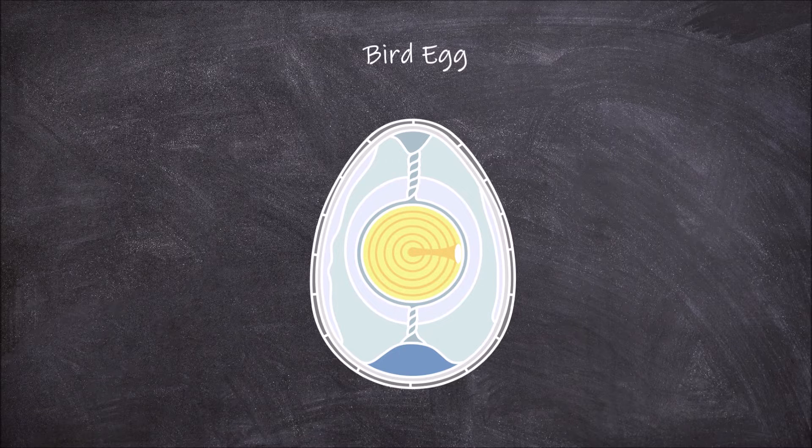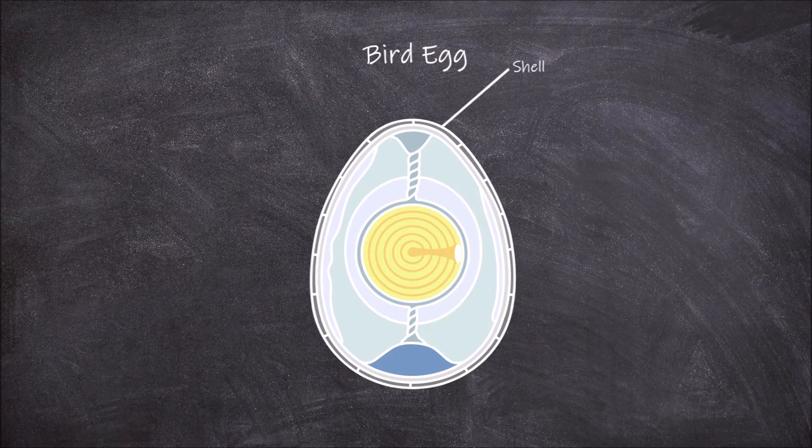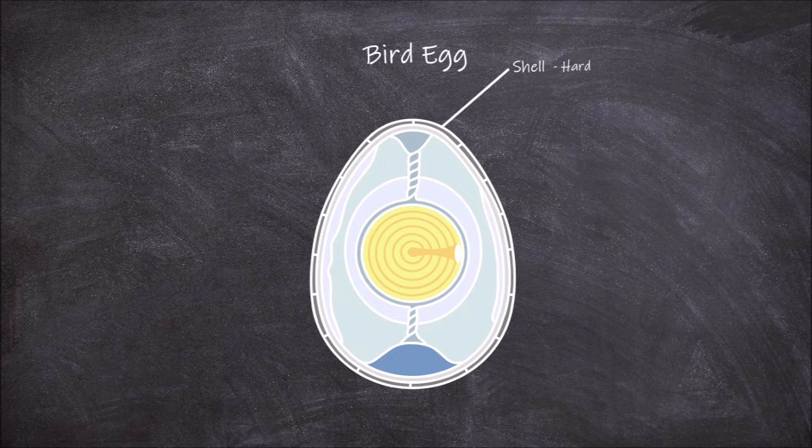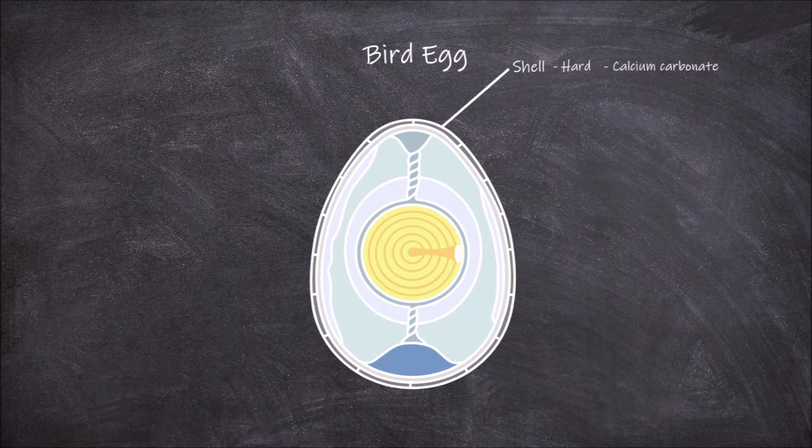This egg we are going to be looking at is an egg before it has been fertilized. The outermost layer of a bird egg is the shell. The shell is hard and is made from calcium carbonate. The main function of the shell is providing an outer layer of protection for the contents inside the egg.